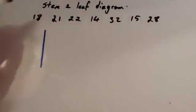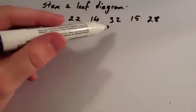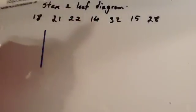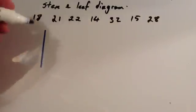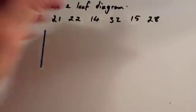And then look at the numbers you're dealing with. Okay, so we've got 18, 21, 22, 14, 32, 15, and 28. The smallest one is 14, the largest one is 32. So, usually in the stem you put the tens, if it's numbers in the tens.